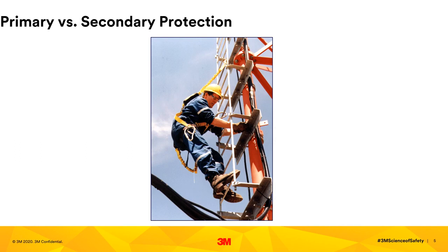When working at heights, all workers must have two lines of defense against a fall. The first line of defense is their primary form of fall protection, which is the worker's main support system — typically their hands and feet or their sense of balance. The second would be a backup in case their primary fails, such as guardrails, fall restraint, or fall arrest.